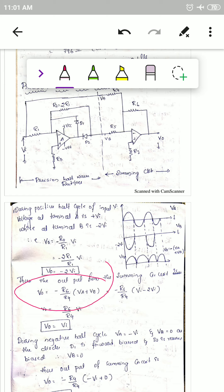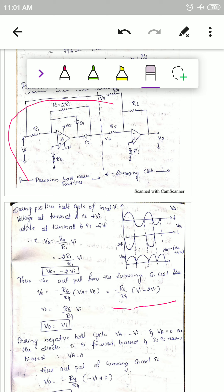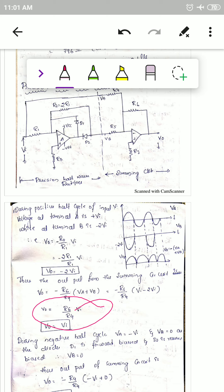The summing amplifier adds VA and VB: output equals minus R6 divided by R4 times (VA + VB). VA equals vi and VB equals minus 2vi. So the result is minus R6/R4 times (vi minus 2vi) equals minus R6/R4 times (minus vi). If all resistance values are equal, V0 equals vi.